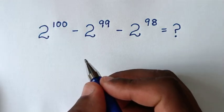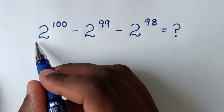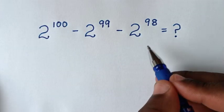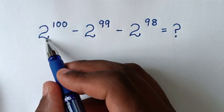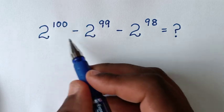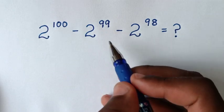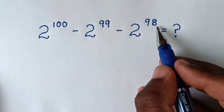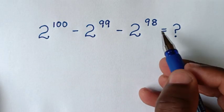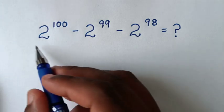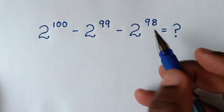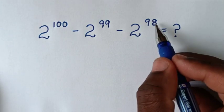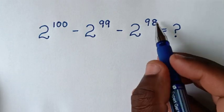Hello, you are welcome to solve this math problem, which is 2 power of 100 minus 2 power of 99 minus 2 power of 98. From this problem, 2 power of 98 is the smallest exponent, so we will make this common.